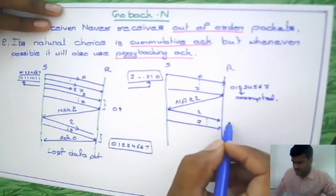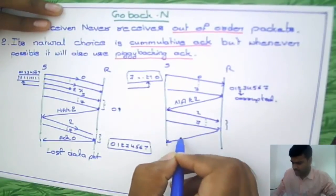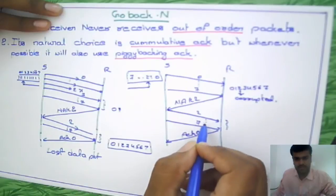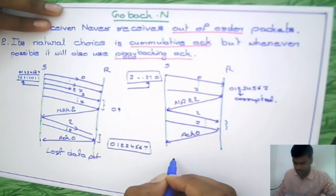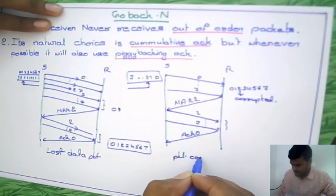So now it is going to give ACK 0 acknowledgement for all these packets. So this is the case of packet corrupted.